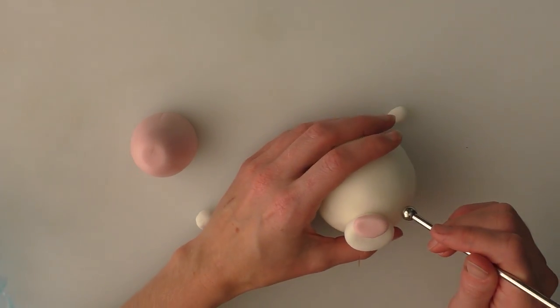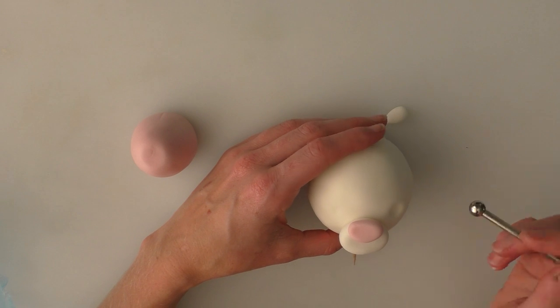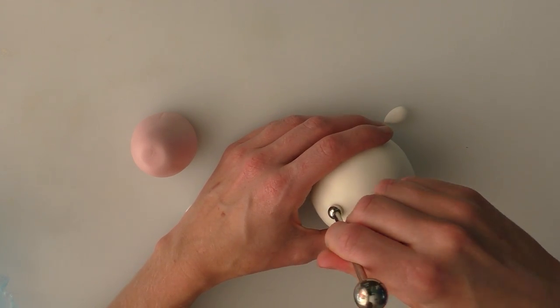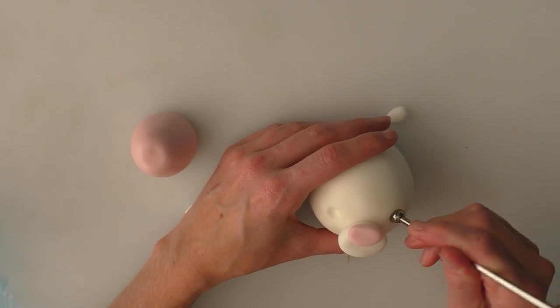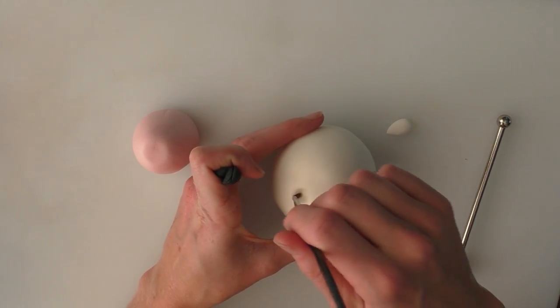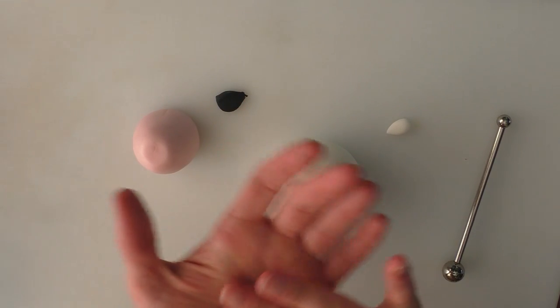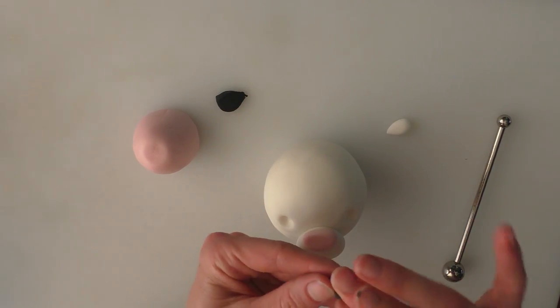Okay so I'm just going to push in two eyes where I want its eyes to go or two holes even where I want its eyes to go. This is the tricky bit or the bit I always find tricky is getting them even quite often they end up uneven. And I'm going to put a bit of water in each of the eye sockets and then we're just going to roll two black circles to go in.